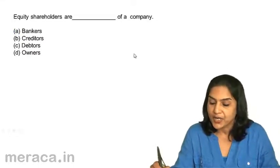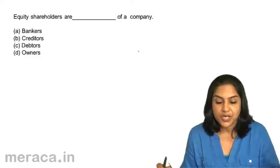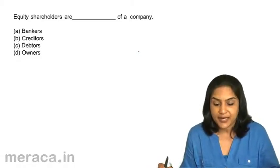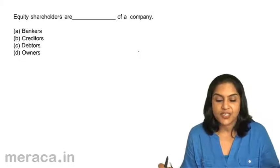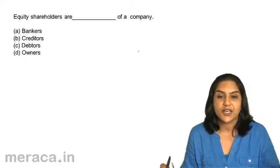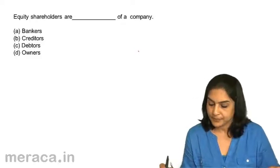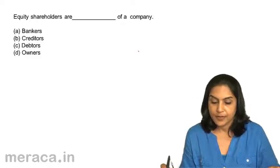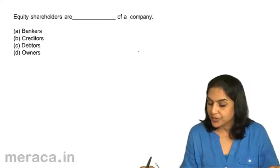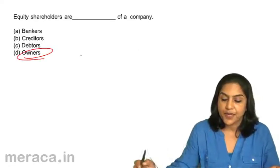Equity shareholders are dash of a company. A. Bankers. B. Creditors. C. Debtors. D. Owners of a company. Equity shareholders are D — Owners of a company. Therefore, correct answer is D.